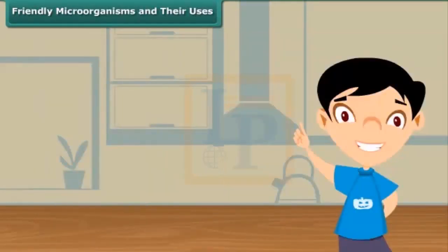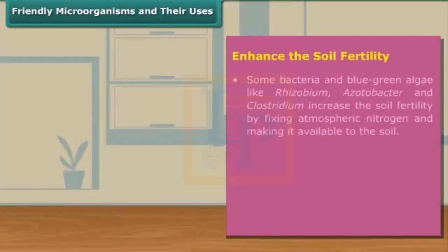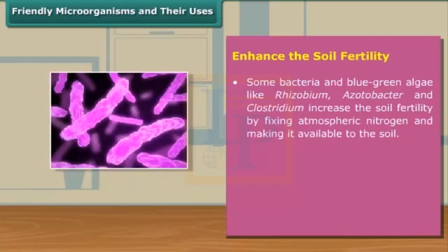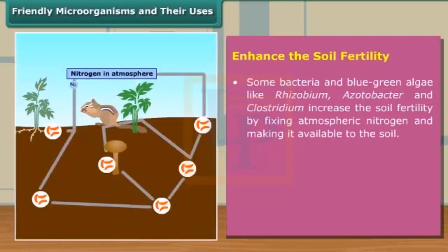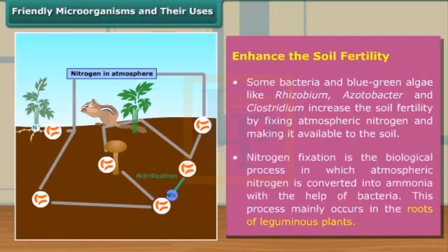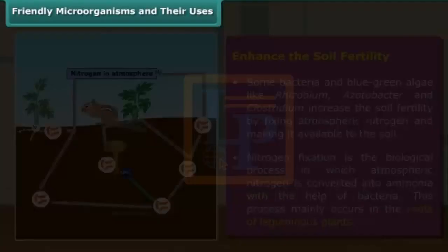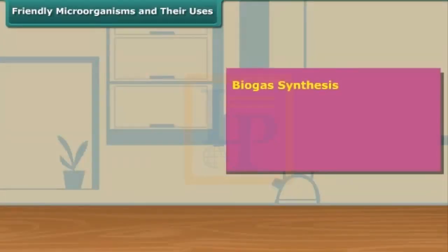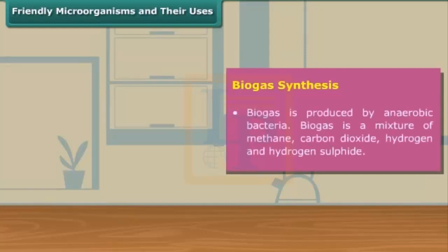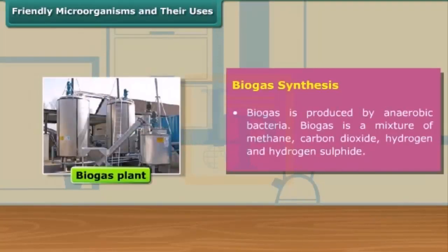Now let me tell you what are other benefits provided by useful microorganisms. Some bacteria and blue-green algae increase the soil fertility by the atmospheric nitrogen fixation process. Nitrogen fixation is the biological process in which atmospheric nitrogen is converted into ammonia. There are other friendly anaerobic bacteria that are used in the synthesis of biogas. Biogas is a mixture of methane, carbon dioxide, hydrogen and hydrogen sulfide.